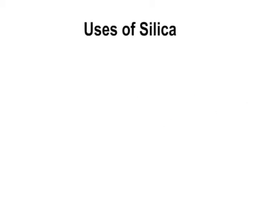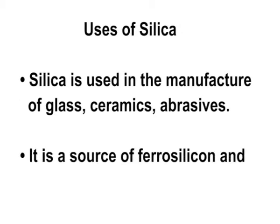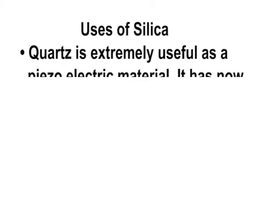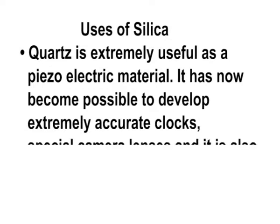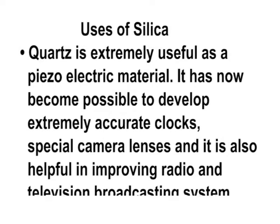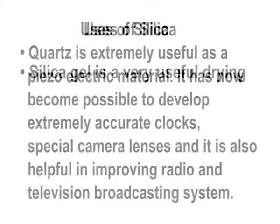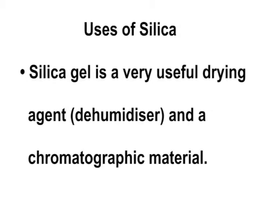Silica is used in the manufacture of glass, ceramics, and abrasives. It is a source of ferro-silicon and elemental silicon. Quartz is extremely useful as a piezoelectric material. It has made possible the development of extremely accurate clocks, special camera lenses, and improvements in radio and television broadcasting systems. Silica gel is a very useful drying agent and chromatographic material.